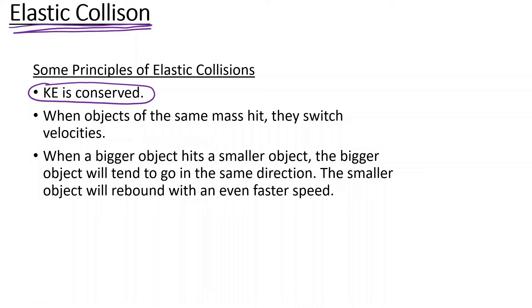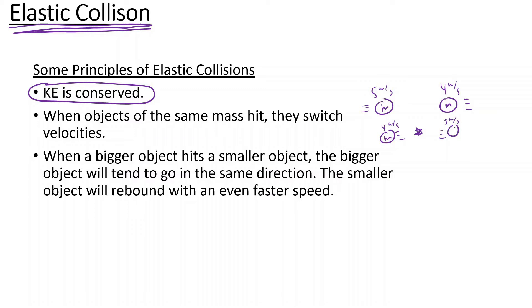Another thing is when objects of the same mass hit, they switch velocities. For example, if a certain mass is going 5 meters per second and another mass with the same exact mass is going 4 meters per second the other way, when they hit, this mass will now be going 4 meters per second and the other mass will now be going 5 meters per second the other way — they switch upon collision.